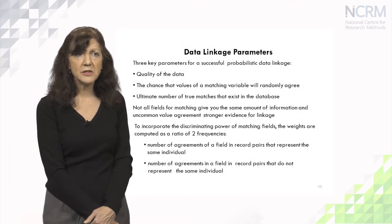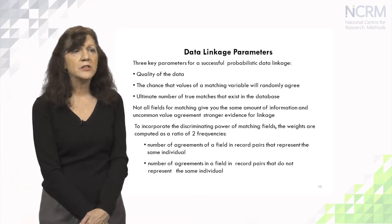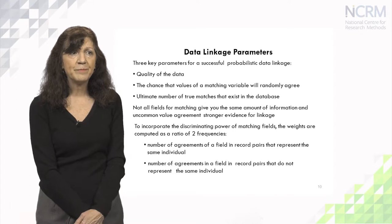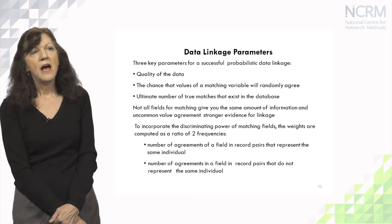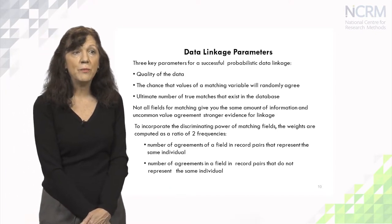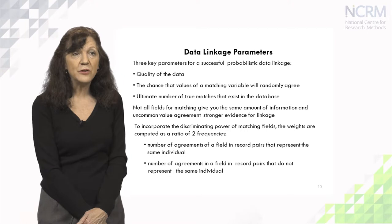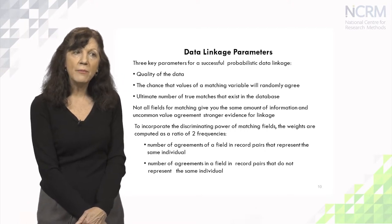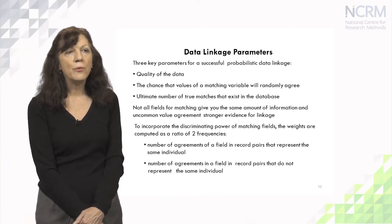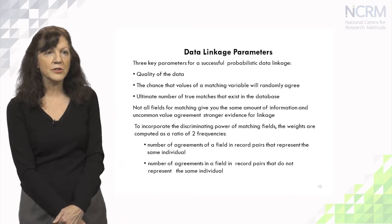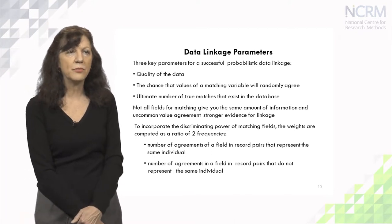There are three key parameters for probabilistic data linkage. The first is the quality of the data. The second is the chance that values of a matching variable will randomly agree. The third is the ultimate number of true matches that exist in the database. Not all matching variables give the same amount of information, and uncommon value agreements should show stronger evidence for linkage. The weights are computed as a ratio of two frequencies: the number of agreements in a field for record pairs representing the same individual, and the number of agreements for pairs not representing the same individual.